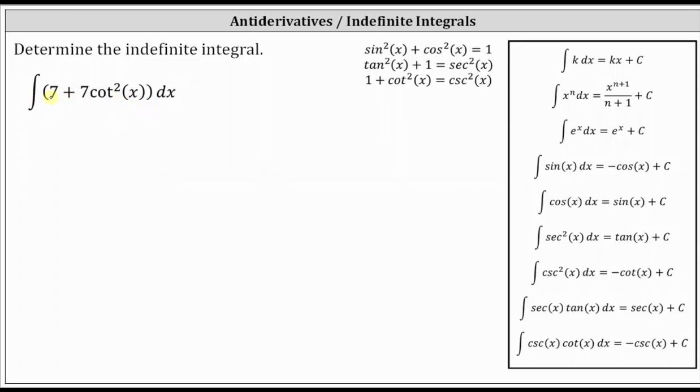Notice how there is a common factor of seven in the integrand function. Let's begin by factoring out the seven. This gives us the integral of seven times the quantity one plus cotangent squared x dx.